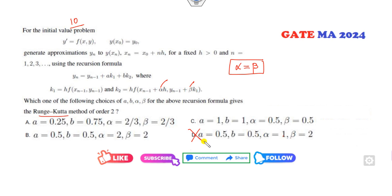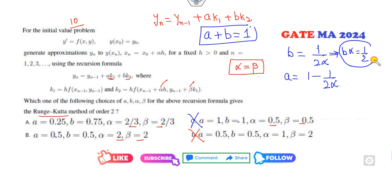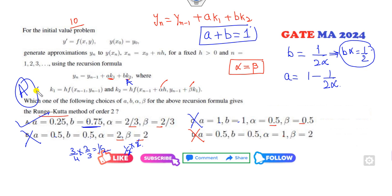So option D is cancelled since alpha and beta don't match there. Next condition: the coefficient of yn+1 requires a + b = 1. Check which options satisfy a + b = 1. Also, b should equal 1/(2α) and a = 1 - 1/(2α), meaning b × α = 1/2. Checking: b = 3/4, α = 2/3 gives (3/4)(2/3) = 1/2 — correct. For the remaining option, a + b is not 1, so it's cancelled. Option A is the right answer.